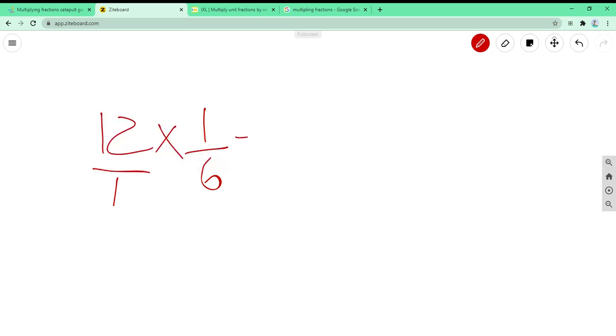Alright, so we do equals. This around here is the numerators and these are the denominators. So we're supposed to do from numerators to denominators. So 12 times 1 is 12.